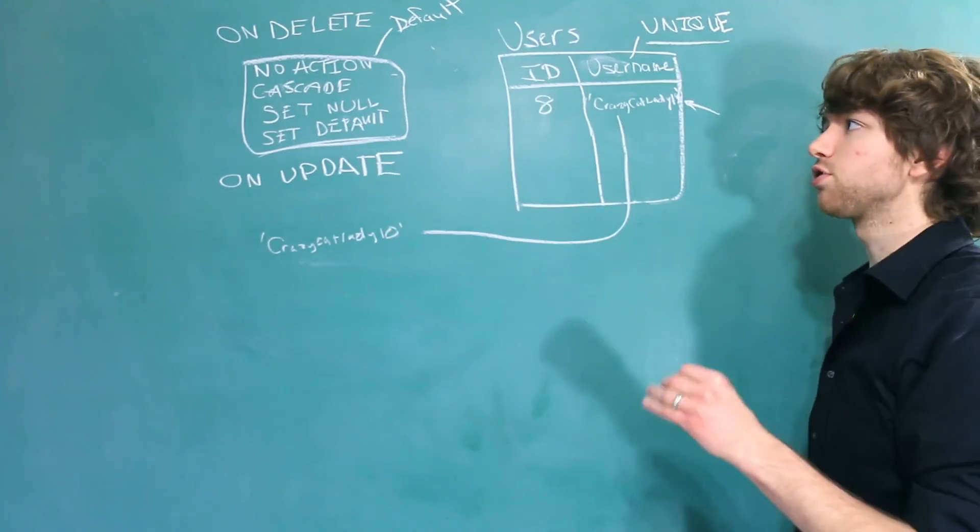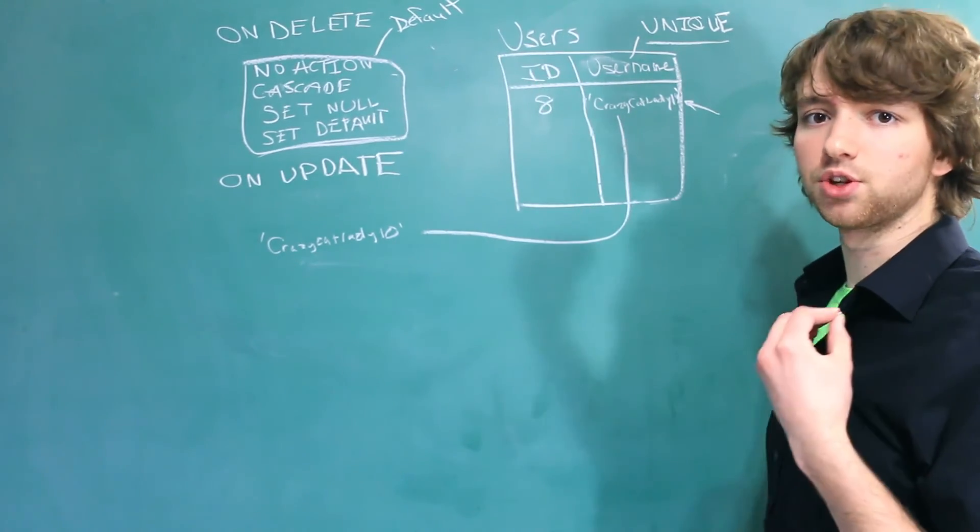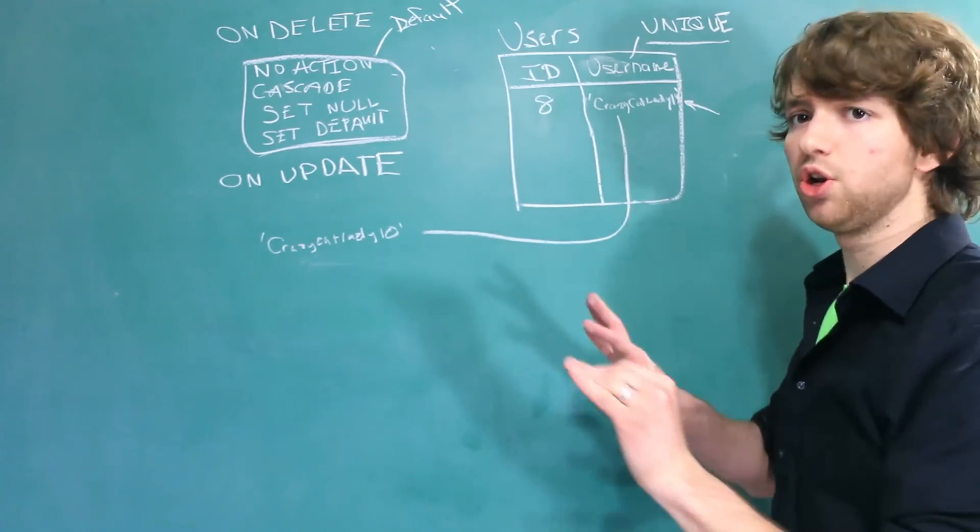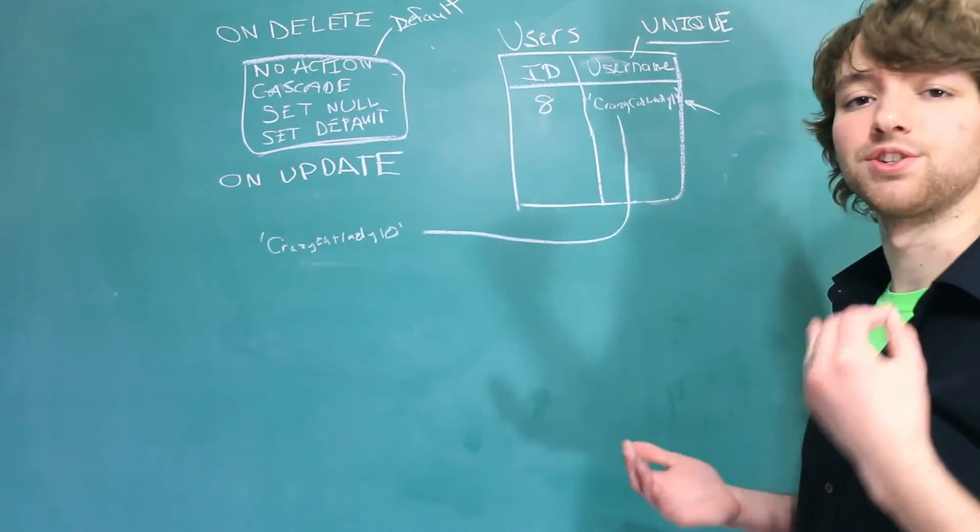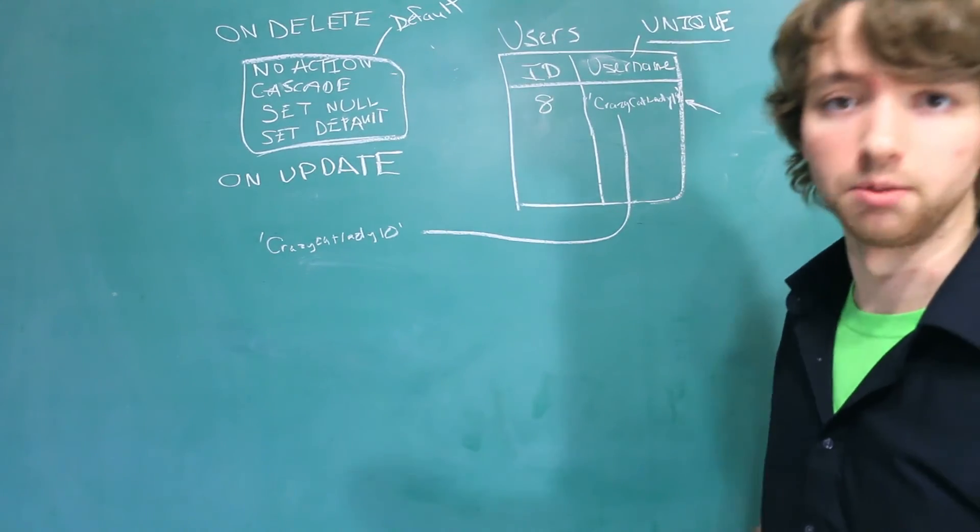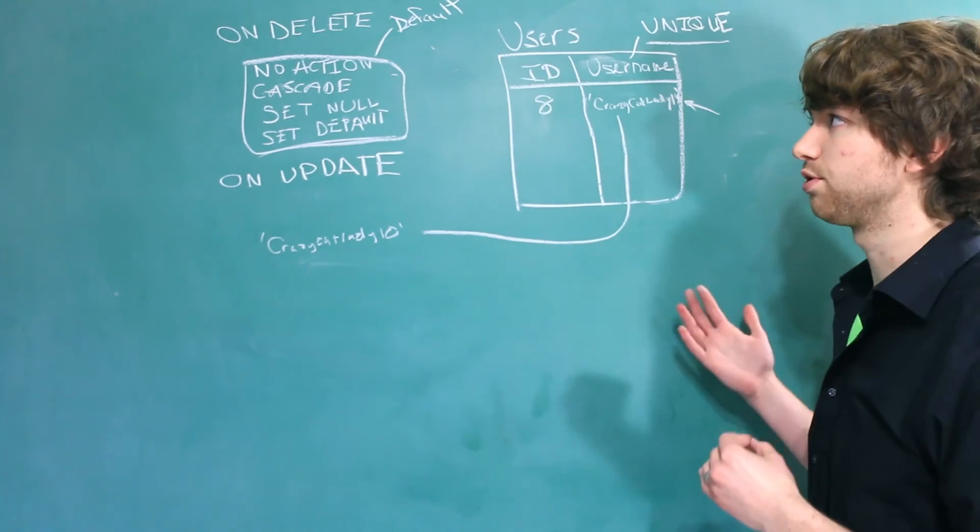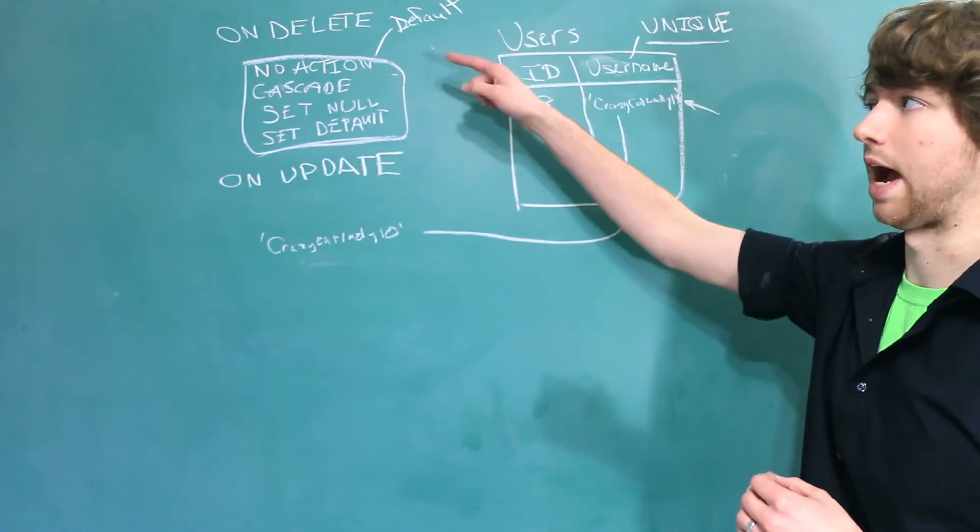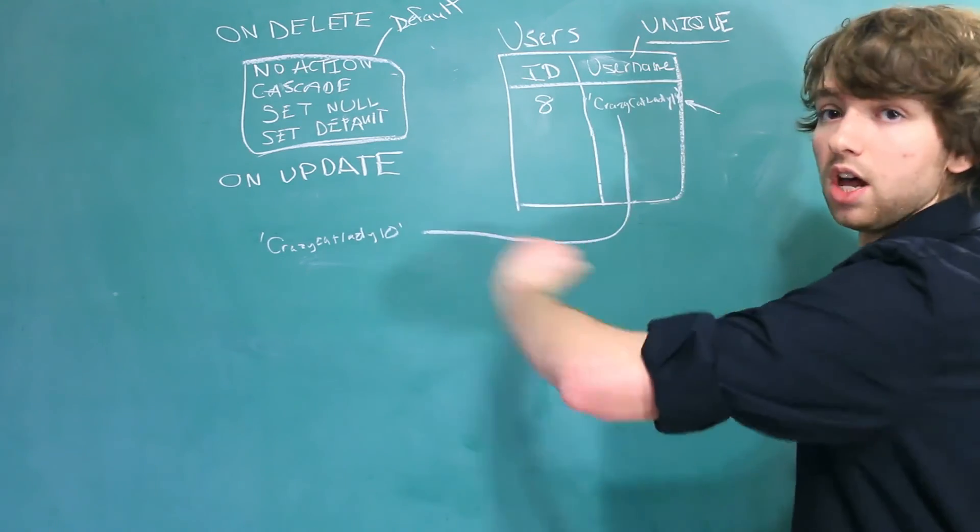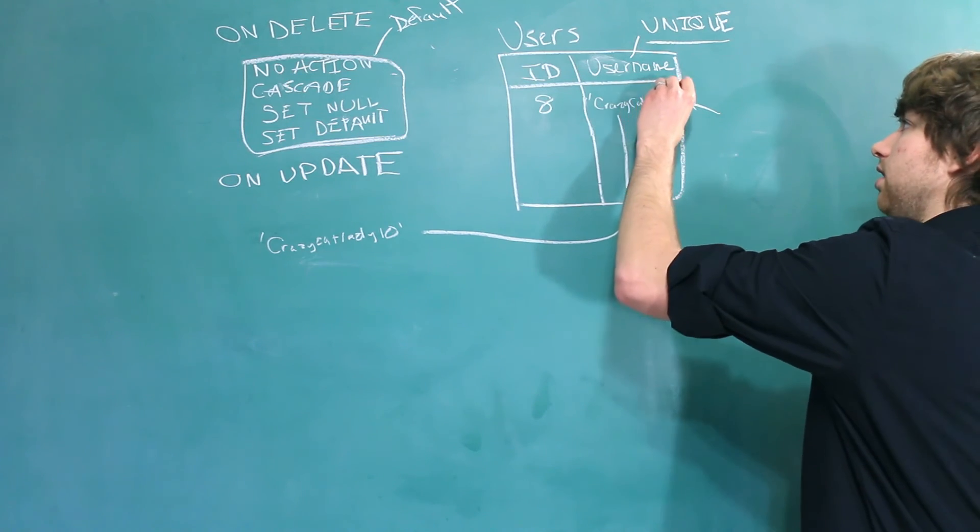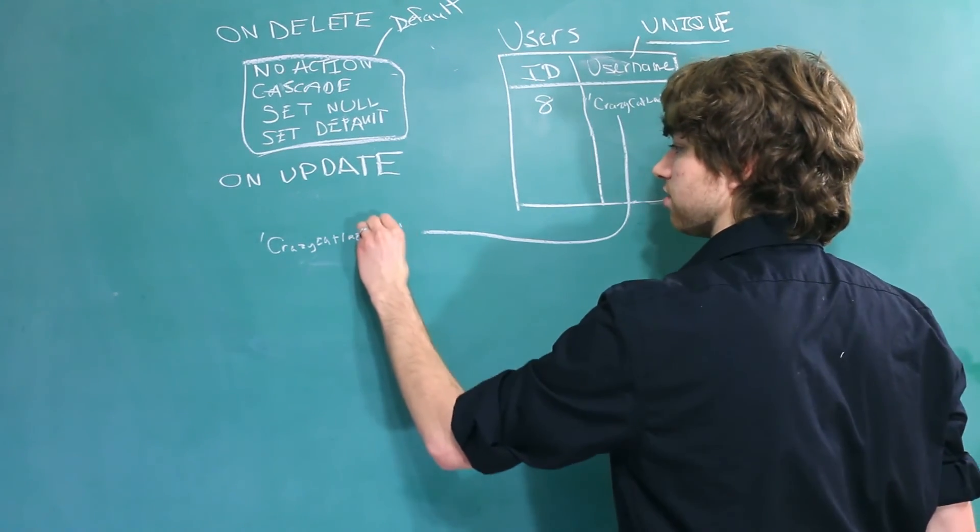Well, let's go through the options. The first one, if we had our foreign key set up as no action, the database is just going to throw an error and say no, bro, you cannot do this. Is that appropriate? Well, in some situations yes, but some websites let you change your username, for example YouTube. So if we wanted people to be able to change their username, we would not want to use no action. CASCADE would send the changes down the line, so if we changed this to crazy cat lady 11, it would go down over here to the reference and change it as well.